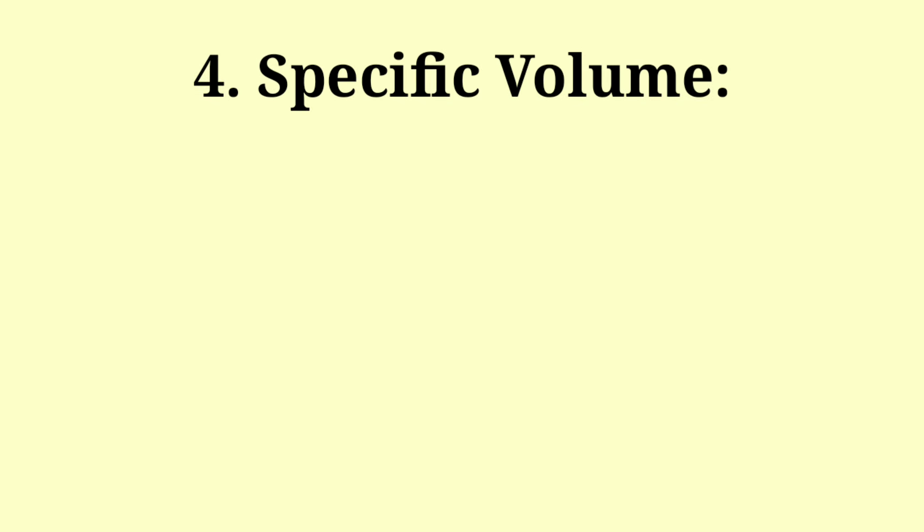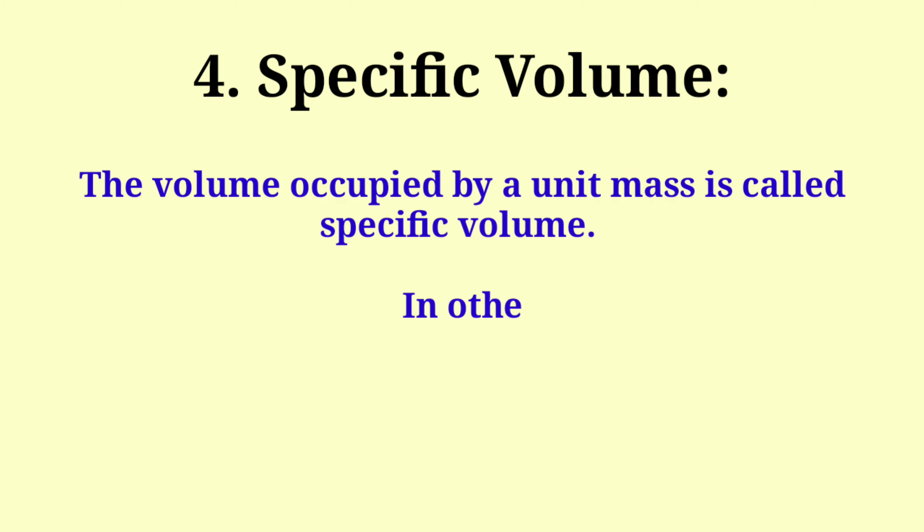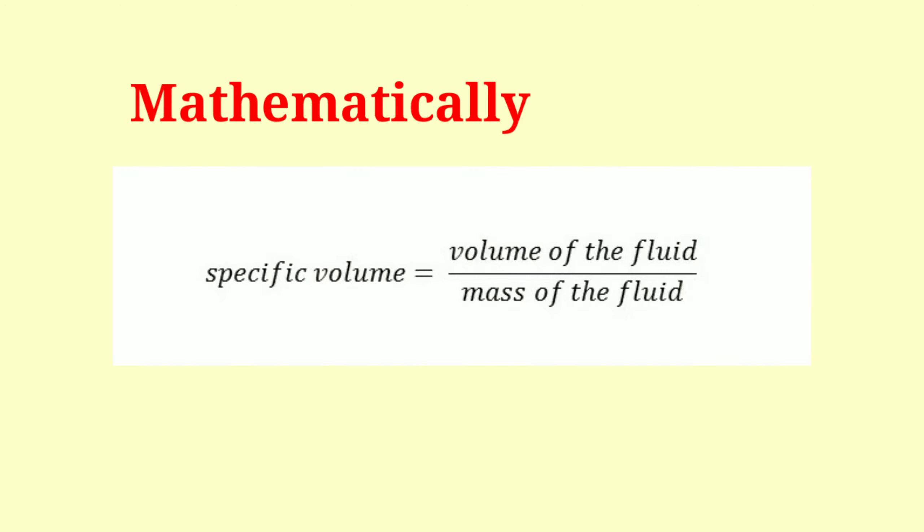Specific volume is the volume occupied by a unit mass, or in other words, the volume per unit mass. Mathematically, specific volume = volume of fluid / mass of fluid.